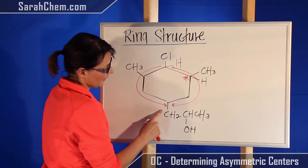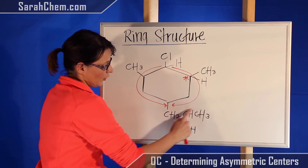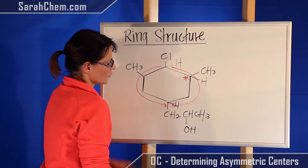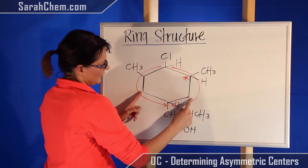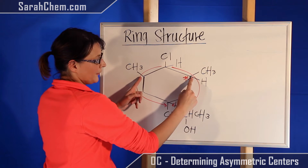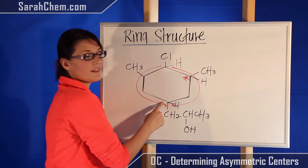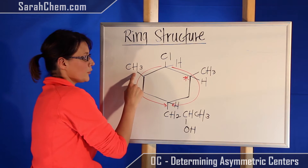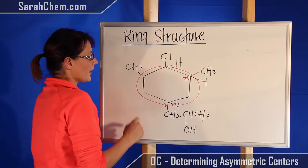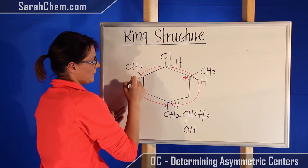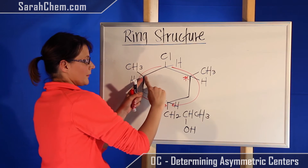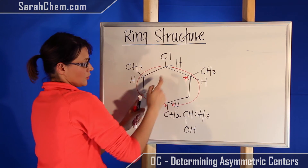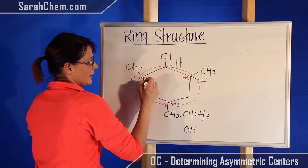Do the same thing over here. On this position I've got this large group attached and also the H, and I move around the ring. Starting here and moving up — same CH2, CH2. Moving up — identical. I end up at the same point. That is not an asymmetric center. Doing the same for this position: I've got the methyl and also a hydrogen. Moving around the ring — CH2 versus CCl right there. These two are different, so this here would also be an asymmetric center.